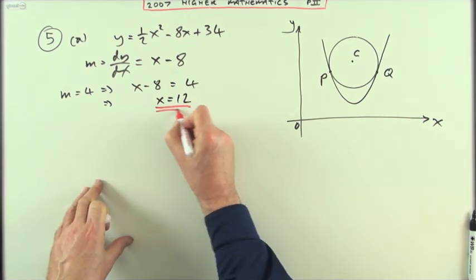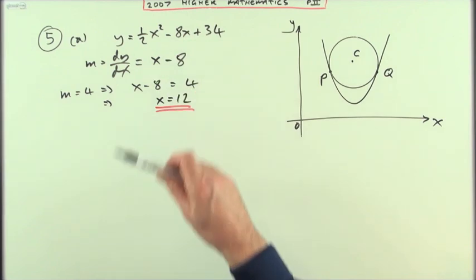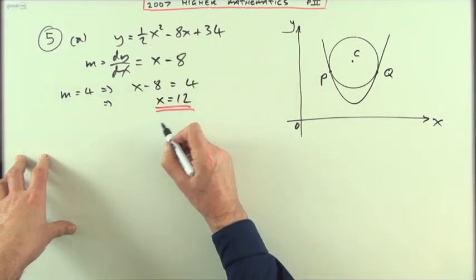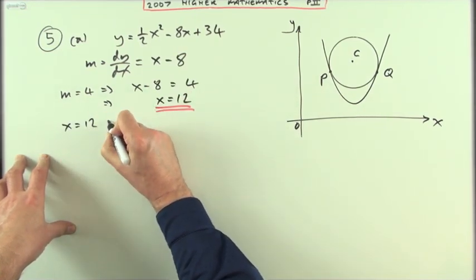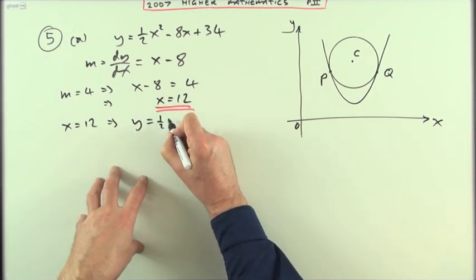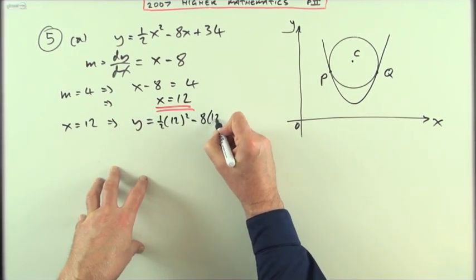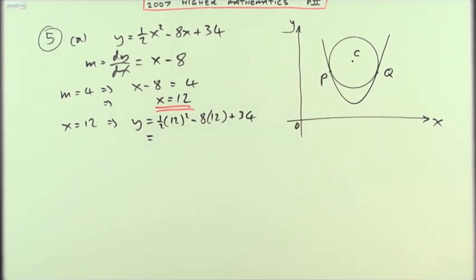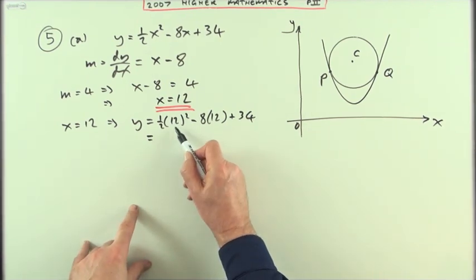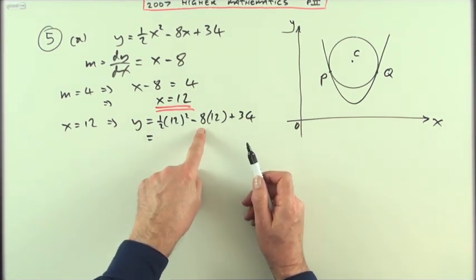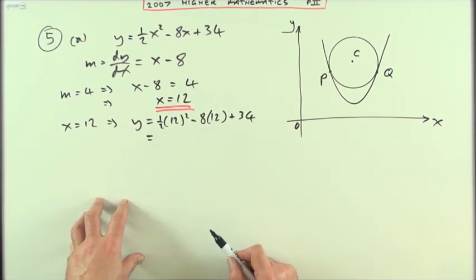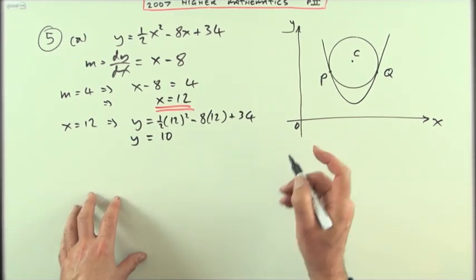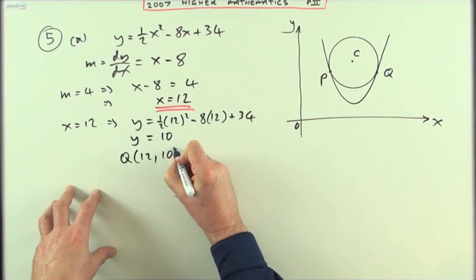Once you know what x is, go back to your coordinate equation — the equation with x's and y's connected — to find the y coordinate. If x is 12, then y equals a half of 12 squared minus 8 times 12 plus 34. A half of 144 is 72; 72 minus 96 plus 34 gives y equals 10. So Q is the point (12, 10).